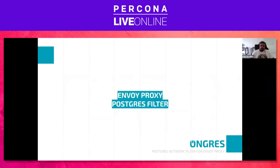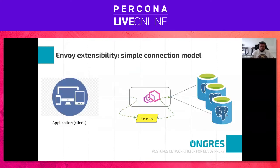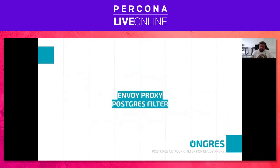For this proxy box functionality, let's introduce Envoy proxy. Envoy proxy is a high-performance C++ distributed proxy designed for single services and applications, built from learnings of solutions such as Nginx, HAProxy, hardware load balancers, and cloud load balancers. Envoy runs alongside every application and abstracts the network by providing common features in a platform-agnostic manner.